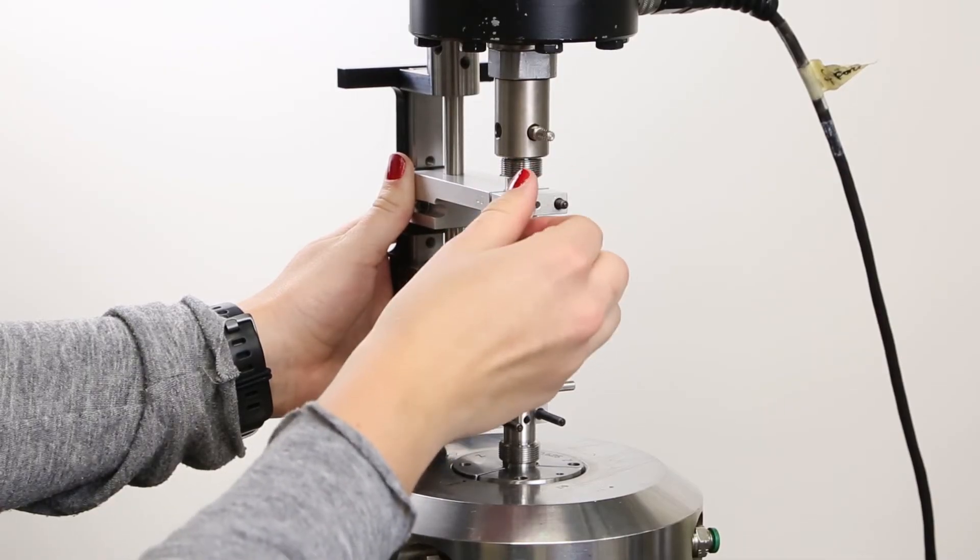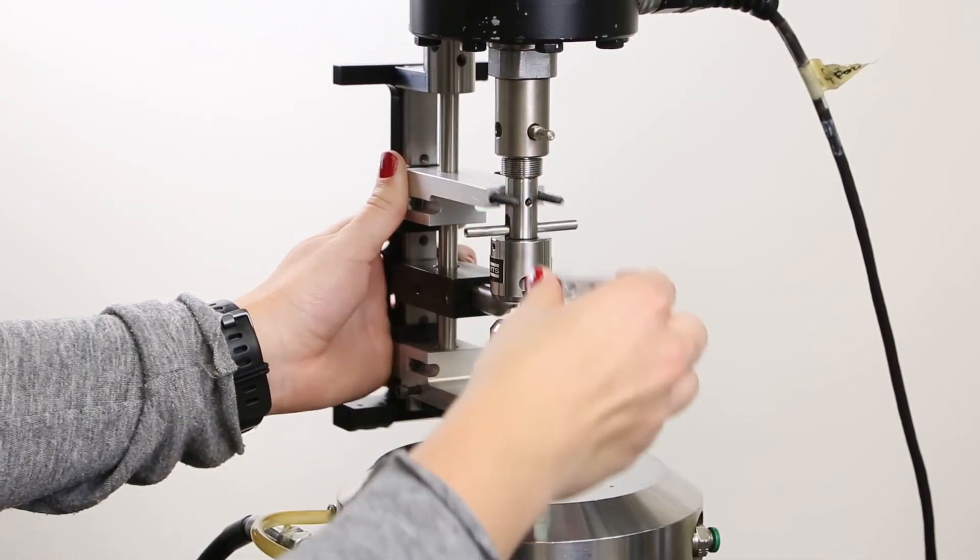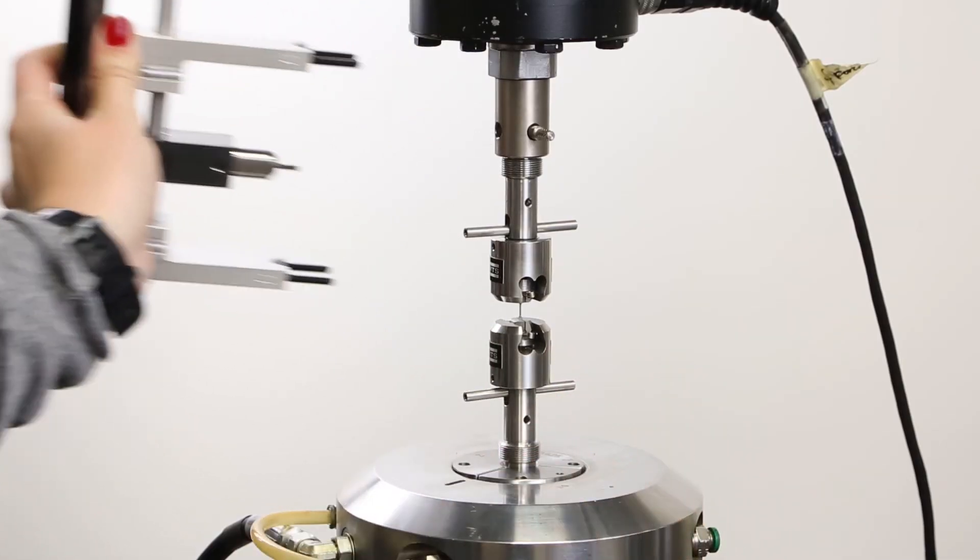When all devices are ready, remove the thumb screws from the jig clamp arms and remove the jig from the grips.